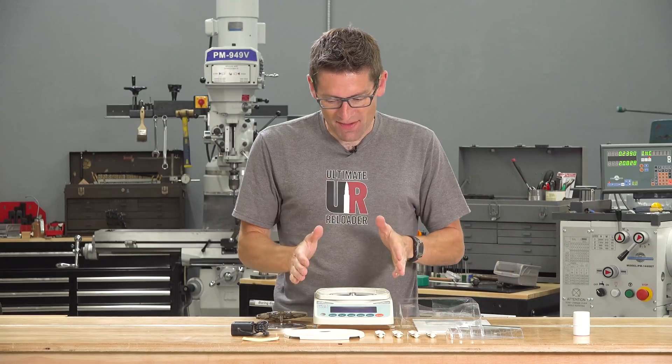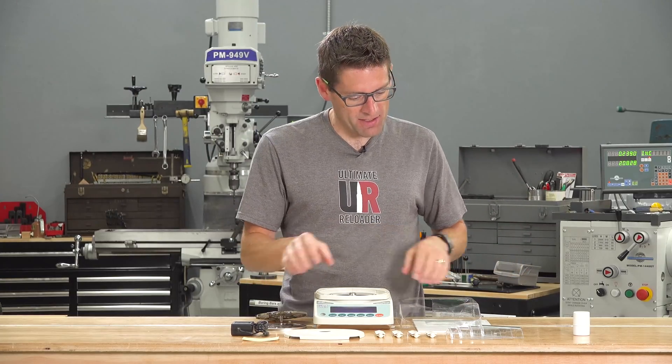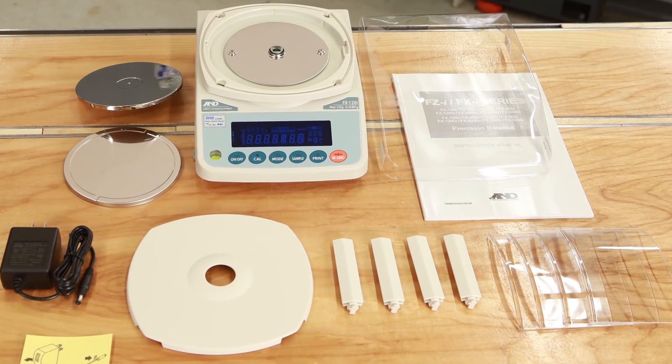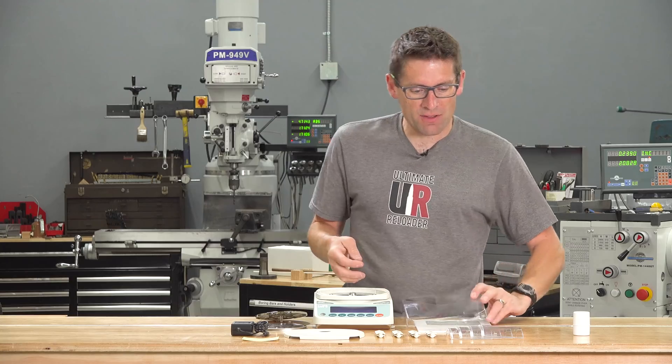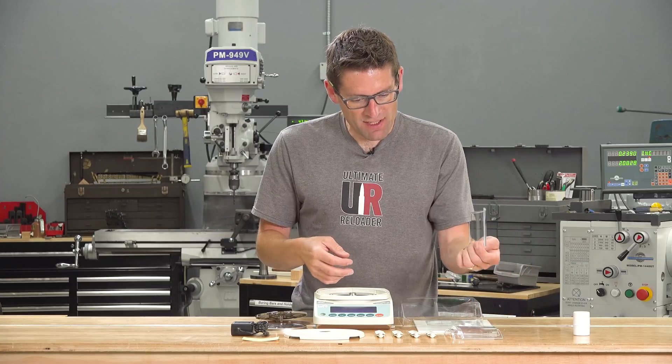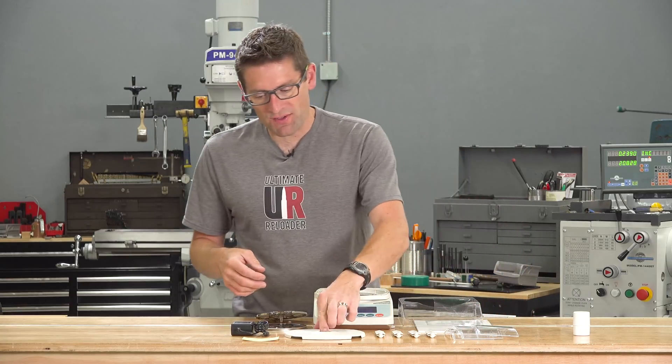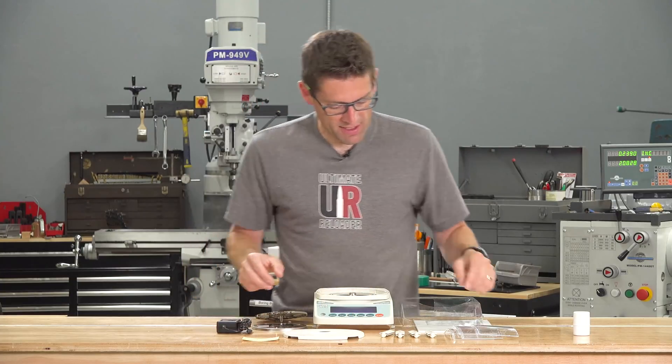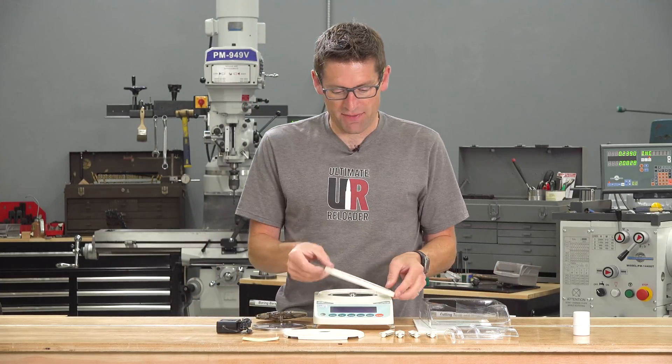So here's what we have. I unpacked everything, I won't make you watch that. We've got the scale itself, the pan base and the pan. We've got a dust cover that goes over the main unit body there. We've got the instruction manual. These are wind screens, vertical supports, the lid, and the AC adapter. So I'm going to go ahead and put this scale together real quick.